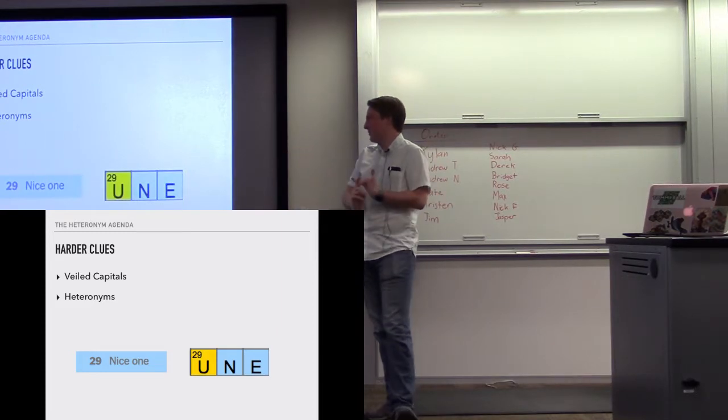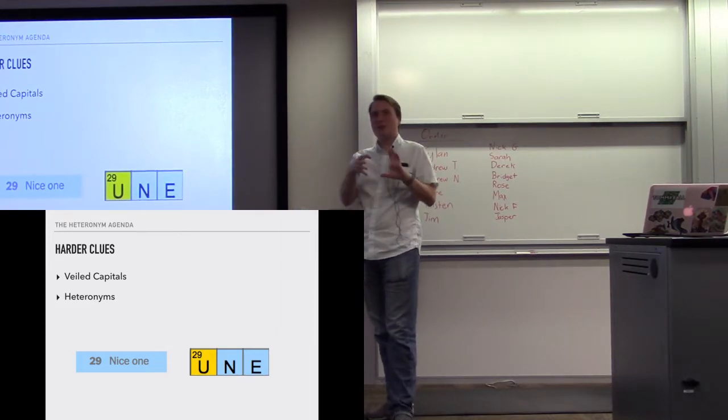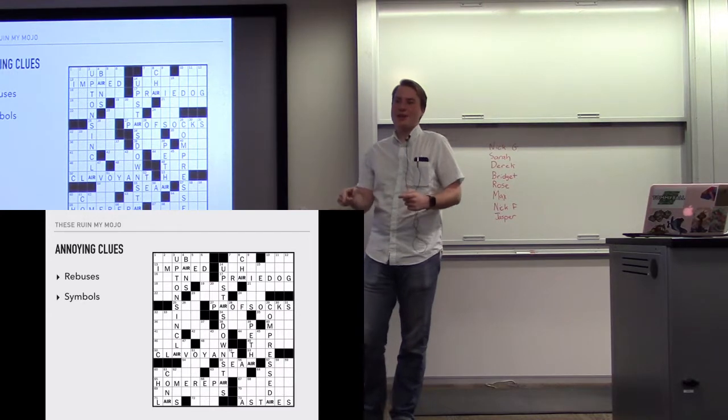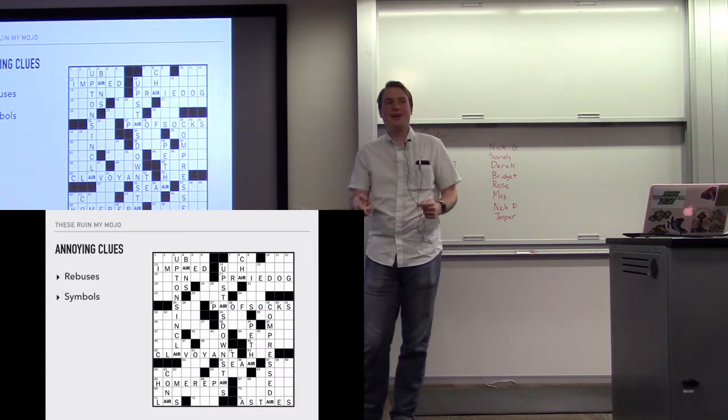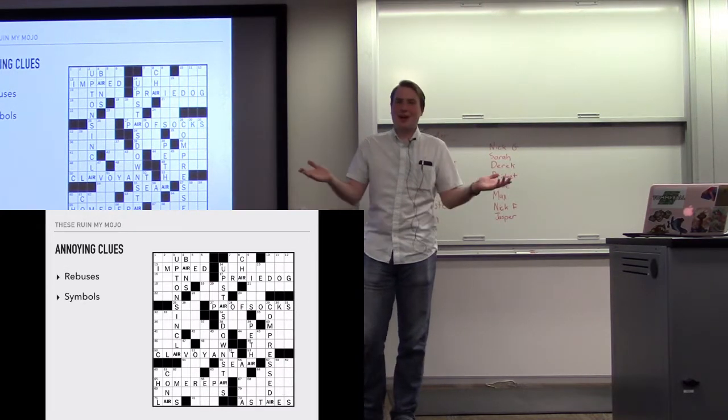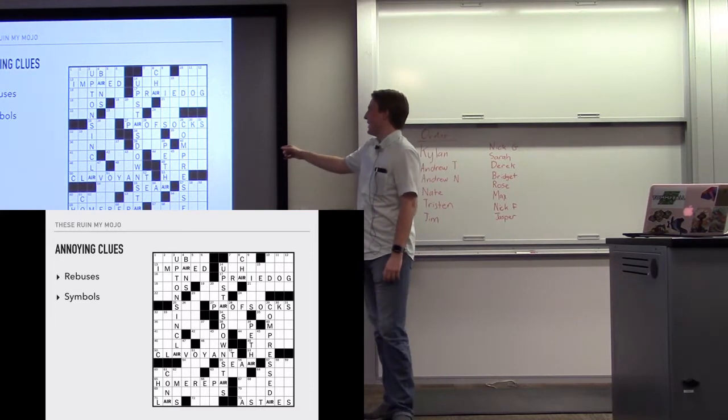Like this one down here, nice one. They always capitalize the first letter and they might sound, they have words that you could pronounce different ways. In this case, it's not a nice one, it's nice one. So it's the French word for one. So it's une. I don't know how you're supposed to figure that out if you don't know about it. These are the ones I think are really bullshit.